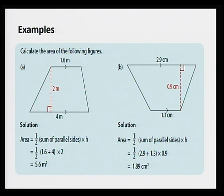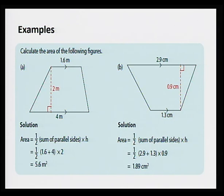In the second trapezium, area is equal to half times sum of parallel sides times height. So half times (2.9 plus 1.3) times 0.9. You must always remember while doing calculations to respect order of operation. So you add 2.9 with 1.3 first, then multiply by half and 0.9. The area is 1.89 centimeters squared.